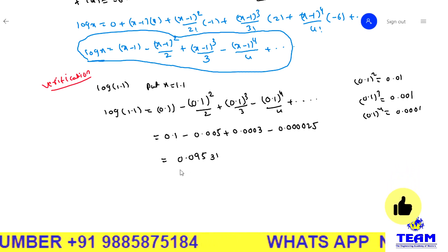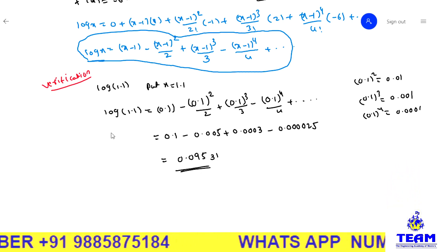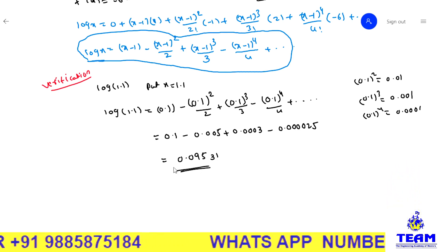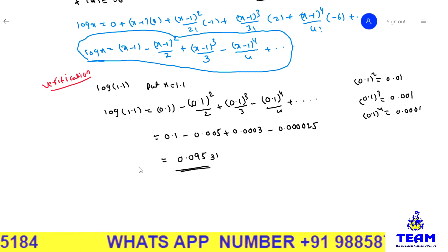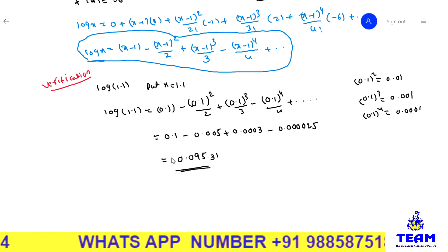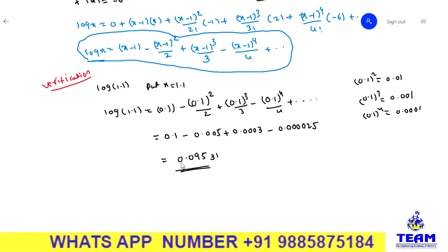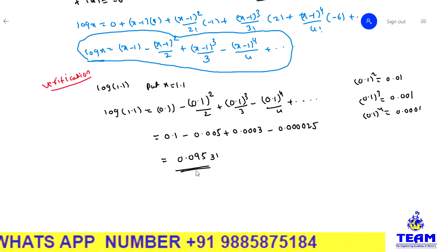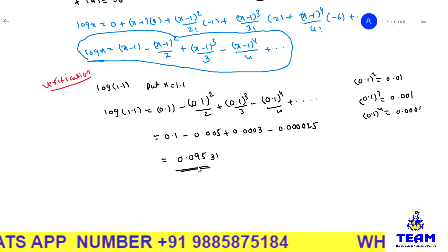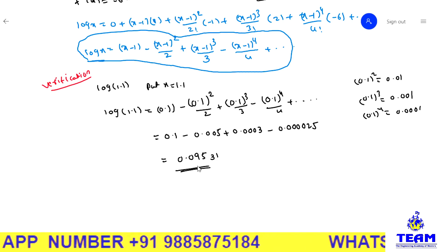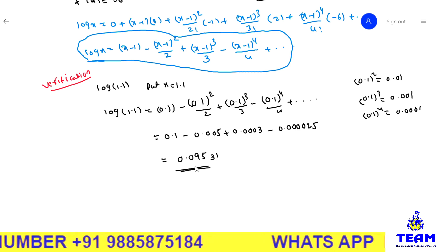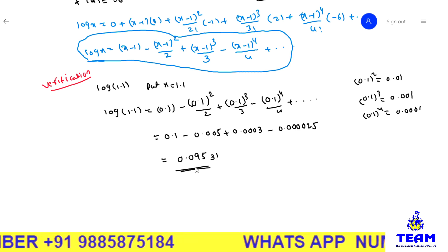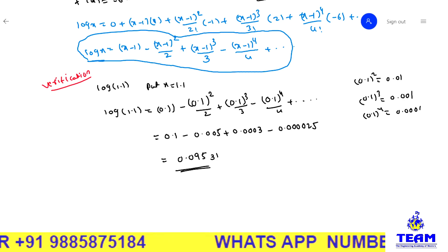So this is the log(1.1) value. Our result and the calculator value are both equal up to 4 decimal places. Thank you for watching this video.